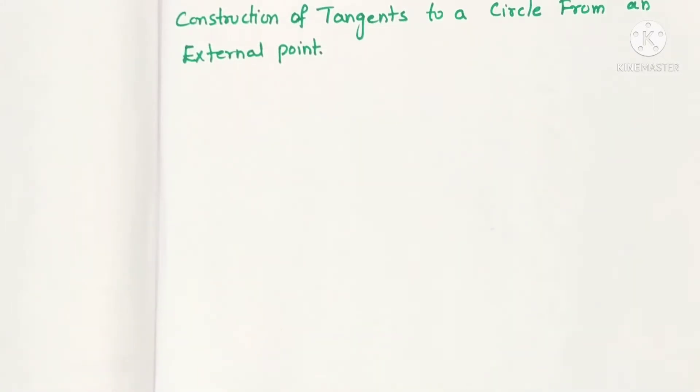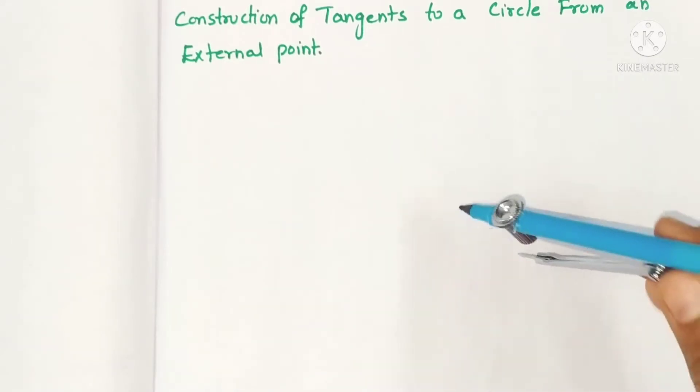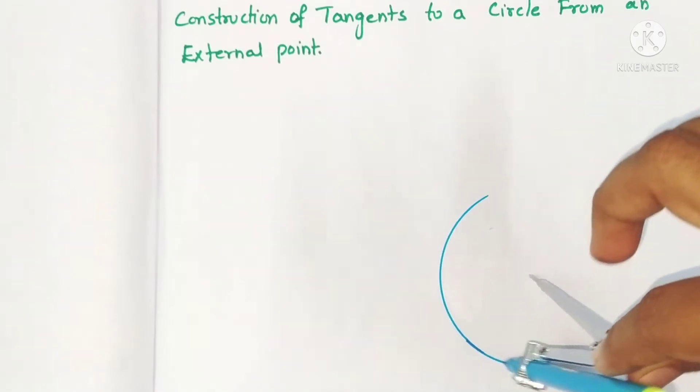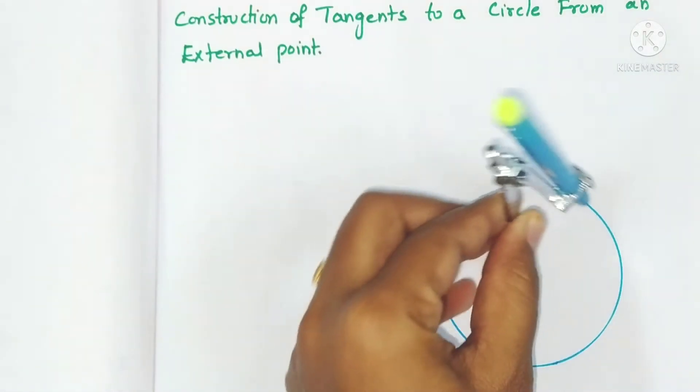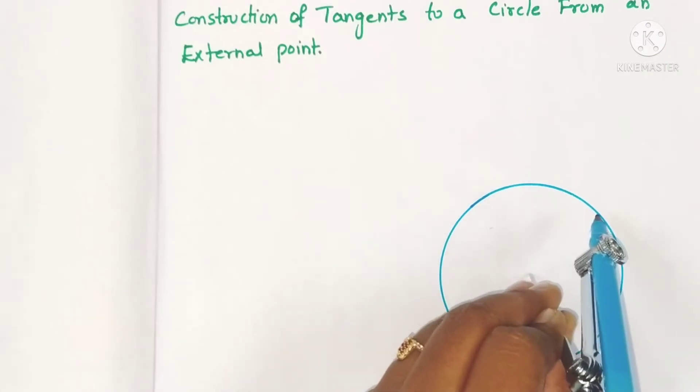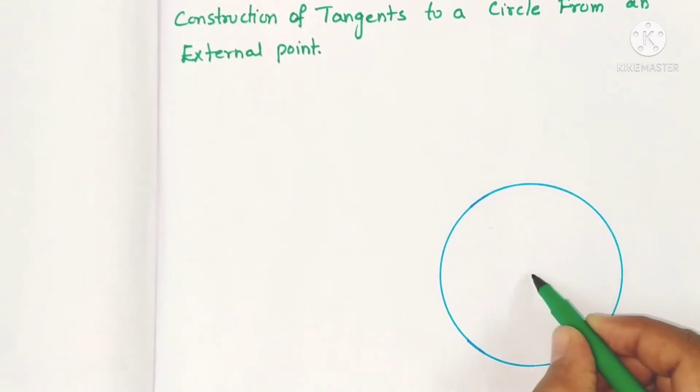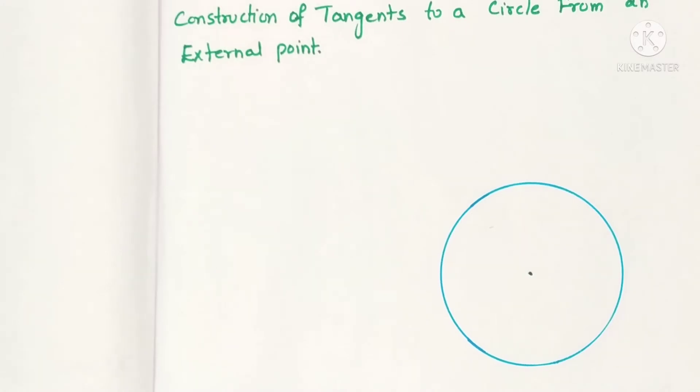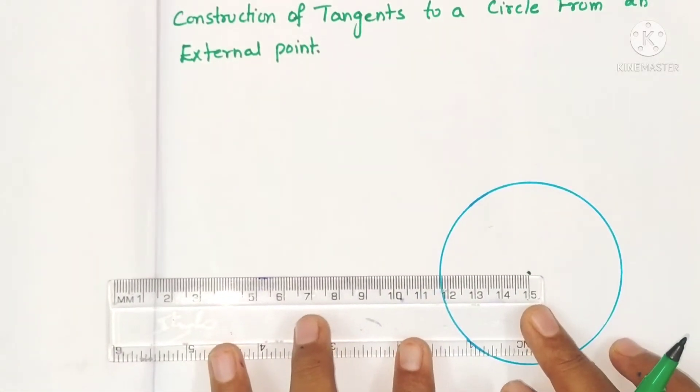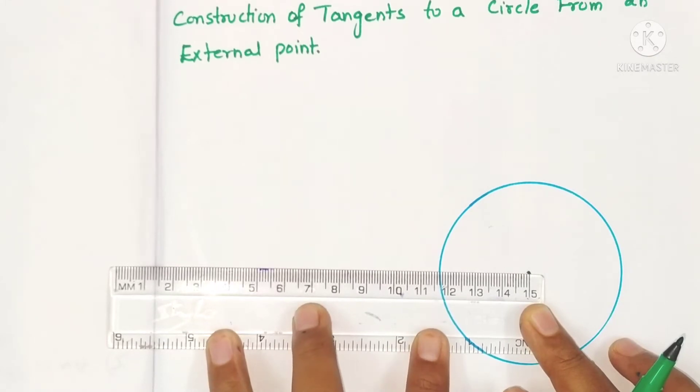For that, take the compass and with some radius draw a circle first. So like this, draw a circle. Now it is the center of the circle, right? Now from the center, just locate an external point.